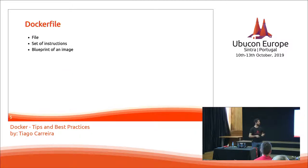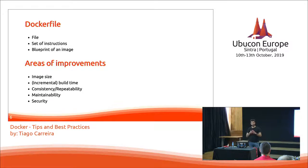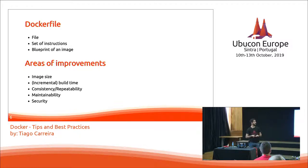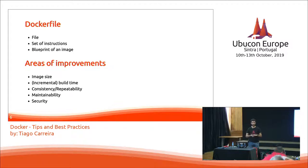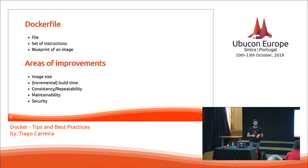A Dockerfile is just a file with a set of instructions and it represents the blueprint of a Docker image. There are lots of things we can improve: image size, the incremental building time for developers — this is very important — the consistency and repeatability so that everyone can run and don't have the 'runs on my machine' problem, and maintainability and security. This is what I'm going to look at today.